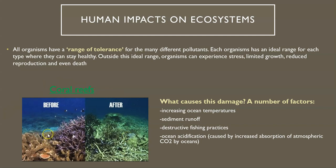We're going to see many different organisms in oceans and on land being forced outside the range of tolerance, starting with coral reefs. Coral reefs have experienced a lot of damage and death over the past 50 or so years. There are a number of different factors that cause this damage, including increased ocean temperatures, sediment runoff — rocks and particles entering ocean ecosystems — destructive fishing practices, and ocean acidification. Ocean acidification is not the same thing as acid rain; it's actually caused by an increase of atmospheric CO2, so the oceans absorb more of that CO2 as well.